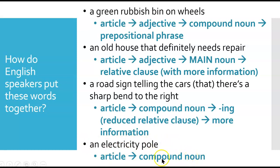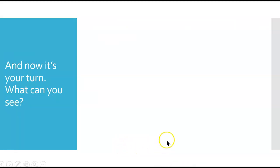An electricity pole is article followed by a compound noun. Remember, a compound noun is noun, noun.